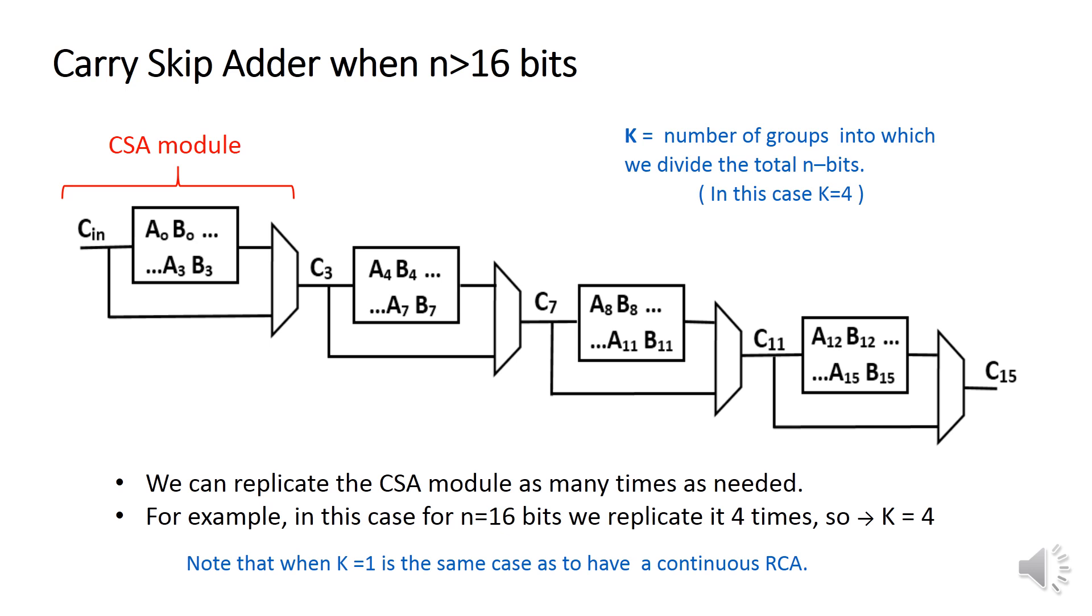So for the case of 16 bits and k equal to 1, we would have only one continuous ripple chain of 16 bits with a unique skip line.